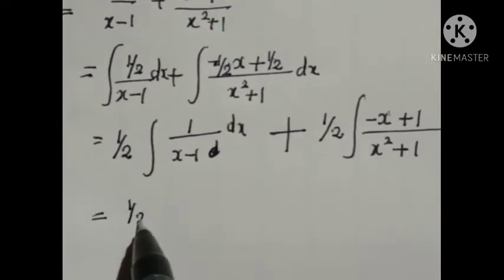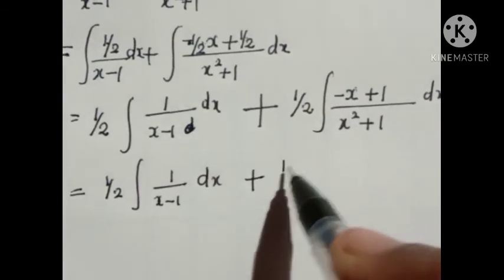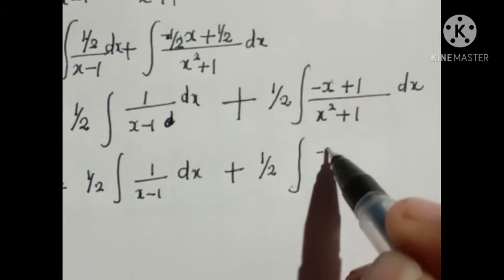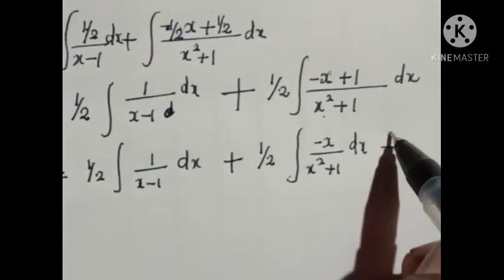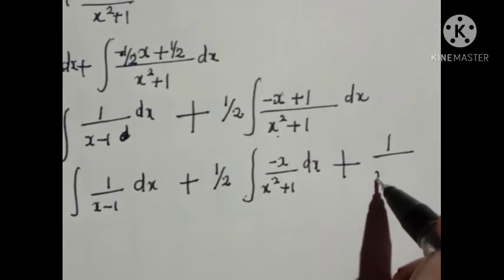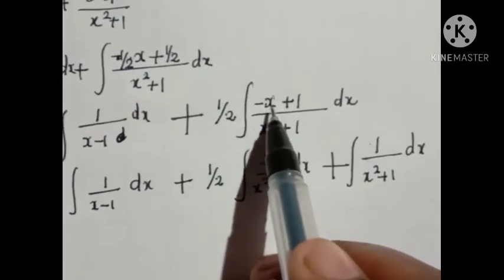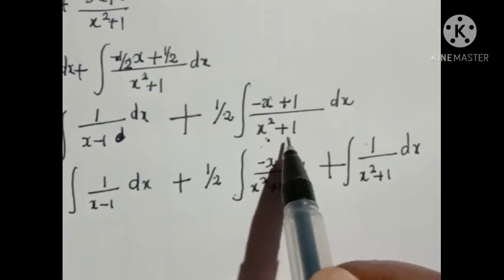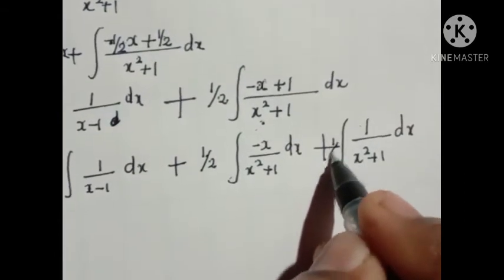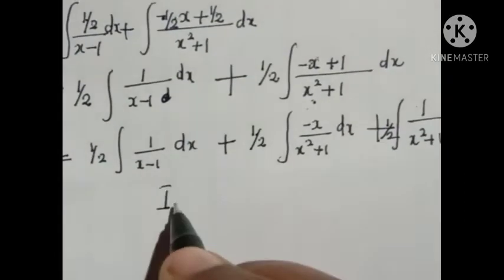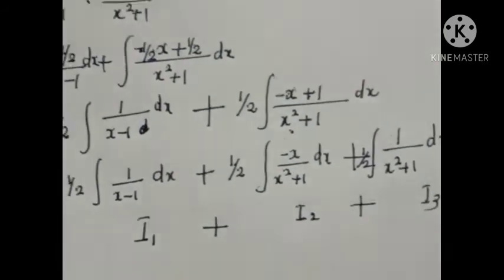We can split the second integral into two parts: (1/2)∫1/(x − 1) dx, plus (1/2)∫(−x)/(x² + 1) dx, plus (1/2)∫1/(x² + 1) dx. Let us call these I1, I2, and I3 respectively. We need to find I1 + I2 + I3.